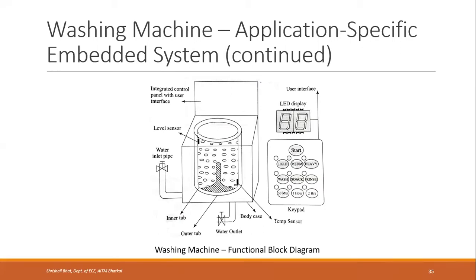There are two types of fully automatic washing machines: front loading and top loading. Prior to this, and even now, there are semi-automatic washing machines where humans have to interfere — for example, removing clothes for rinsing. What we are considering here is a fully automatic washing machine where the complete washing process is done by the machine itself.